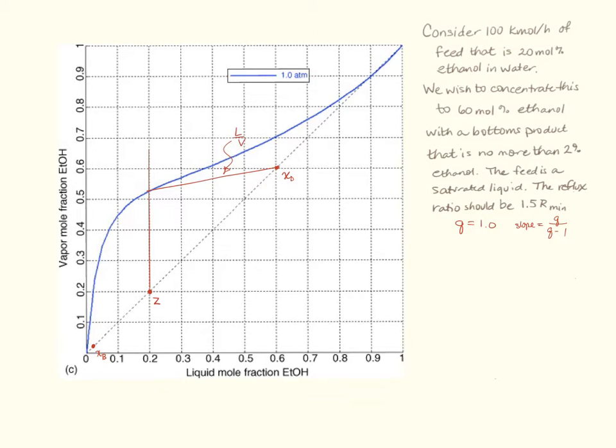Okay so this is l over v, r over r plus 1. This is going to be r over r plus 1. But this is going to be my minimum value, the one that is my limiting case. In this particular case it looks like my rise is 8 units for 40 units here. So this is 8 over 40. This is equal to 0.2 which using a little bit of algebra I find that r minimum is equal to 0.25 which means that the actual r is 1.5 times that or 0.375.